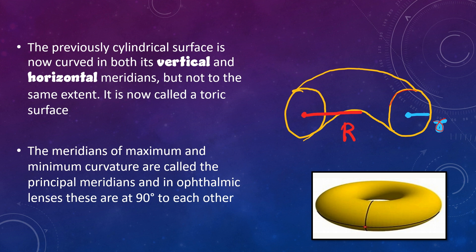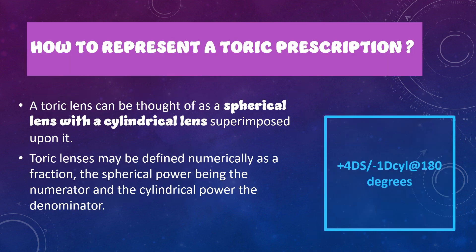In a toric surface, you have two meridians — one vertical and one horizontal — and both of them have different curvatures and different powers. These meridians are located at 90 degrees to each other. To summarize: in spherical lenses you have equal power in all meridians; in cylindrical lenses you have power across only one meridian; and in a toric lens you have power across two meridians, but these two powers will be unequal, and the meridians are at 90 degrees to each other.